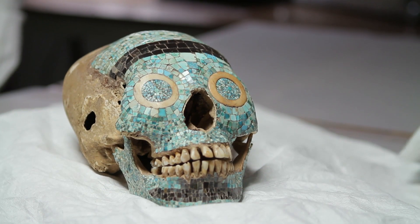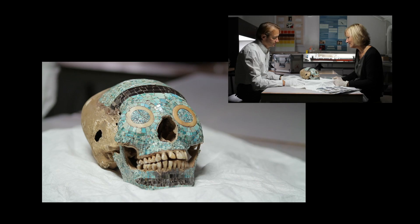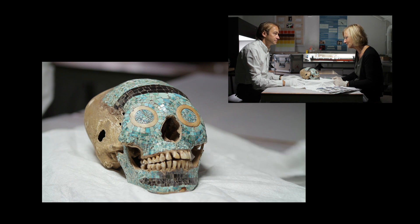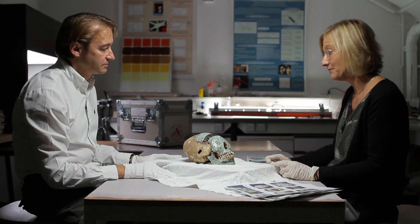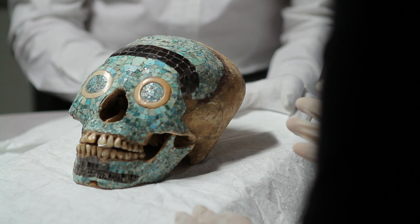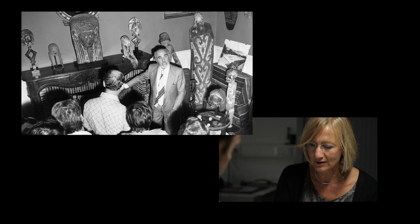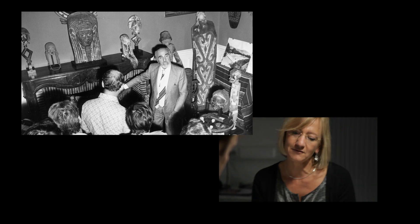Ce crâne provient de la collection Gasto, une célèbre collection de crânes du monde entier rassemblée par le professeur Gasto. Parmi les 60 crânes présentés, il y a ce crâne à mosaïque. Il arrive sur le marché de l'art dans les années 60, en 63 plus précisément. Et Henri Gasto, qui est en train d'achever sa collection, veut acheter ce crâne.